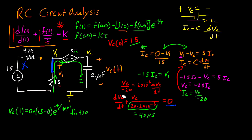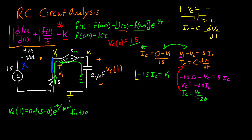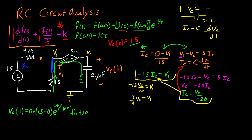Now let's find v1 of t. From the earlier circuit analysis, we found that negative 15 ic equals v1, and ic equals vc divided by negative 20. Substituting: negative 15 times (vc divided by negative 20) equals v1, which simplifies to three-fourths vc equals v1. Therefore, v1 of t equals three-fourths multiplied by vc of t, which gives 15 times three-fourths times e to the negative t divided by 40 microseconds.